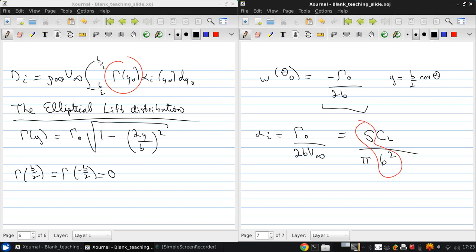The wingspan squared over the reference area, so this is just the inverse of the aspect ratio, AR. So from that, we get that the induced angle of attack is CL over pi AR.